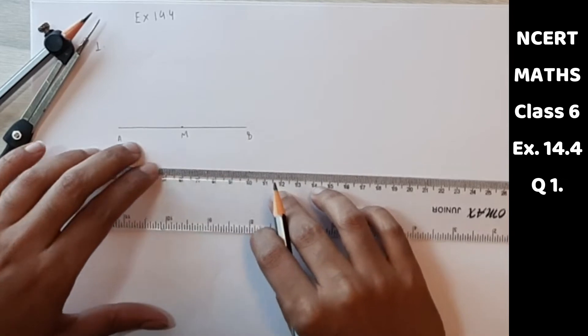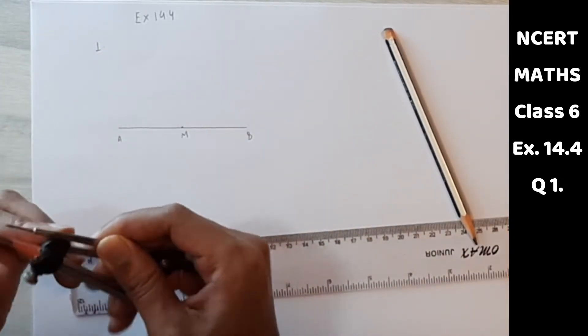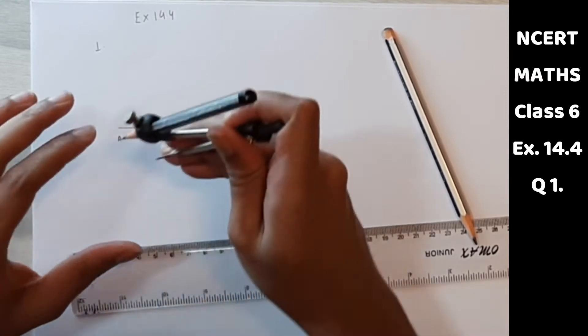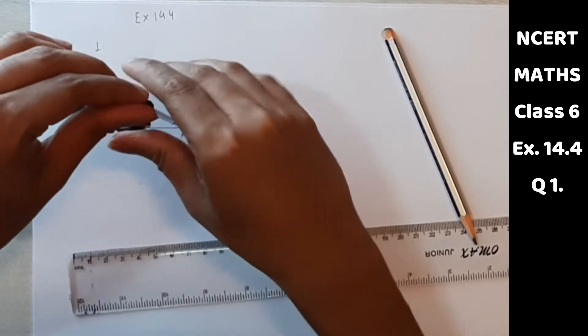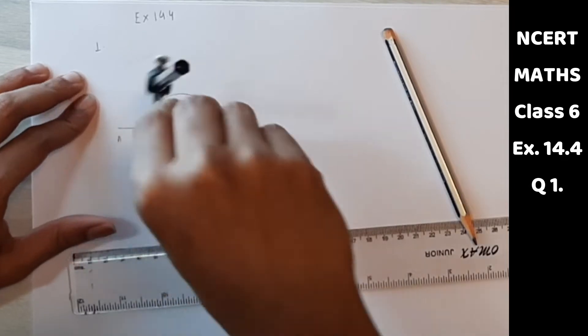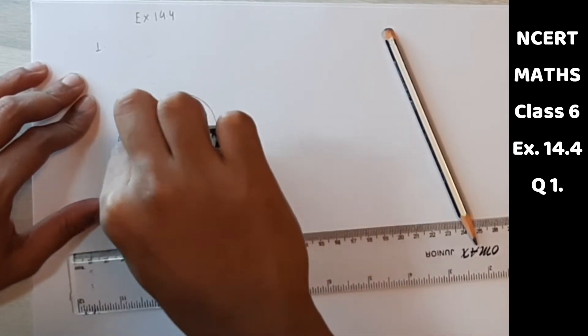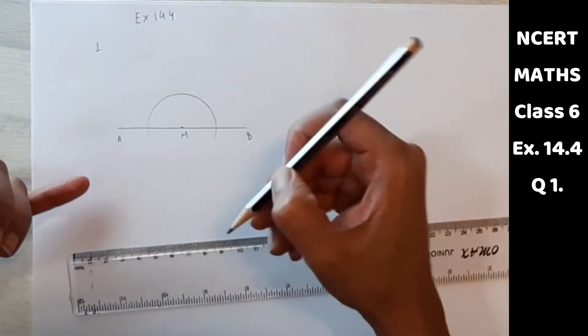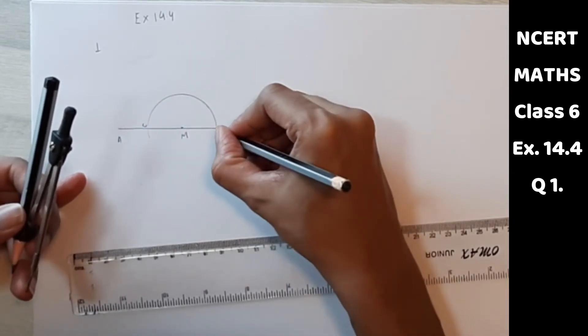M. Then we have to draw perpendicular through M, a line perpendicular to AB through M. So from point M, draw an arc. Now this arc cuts AB at CD.